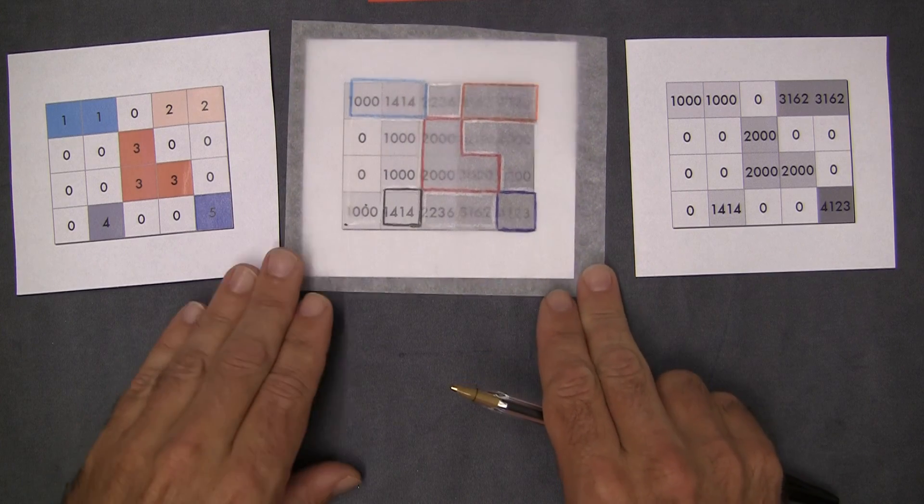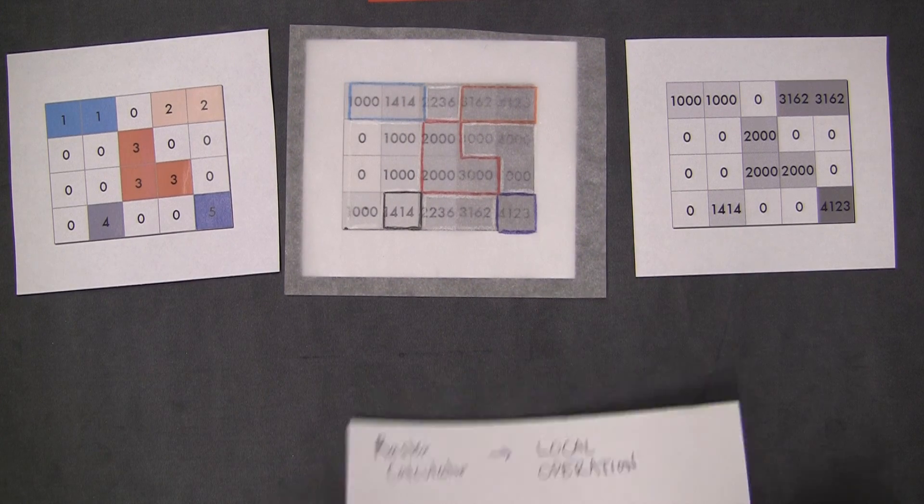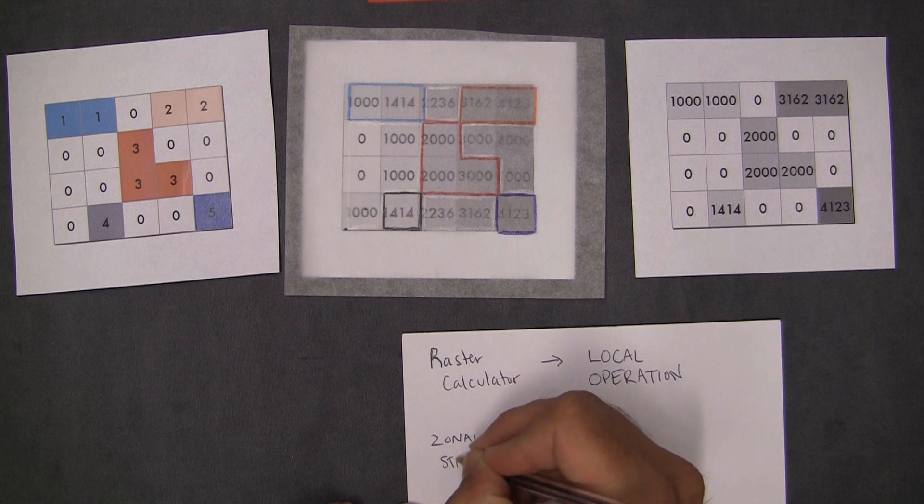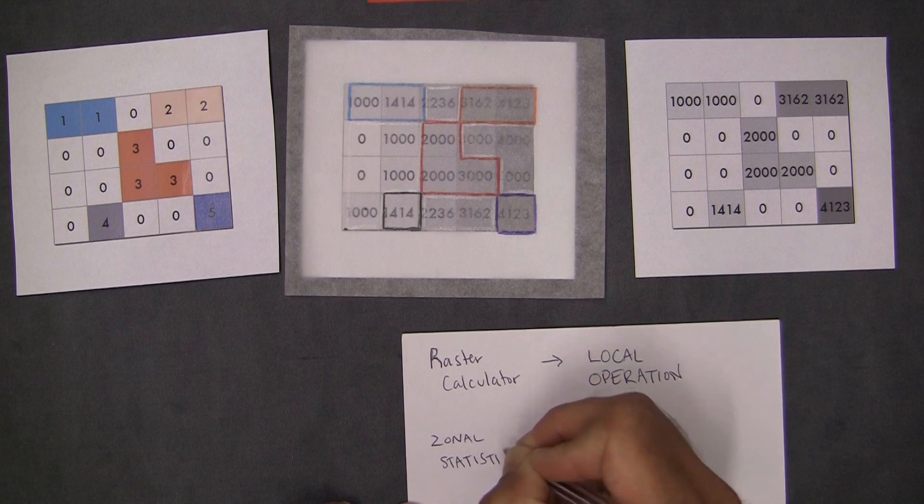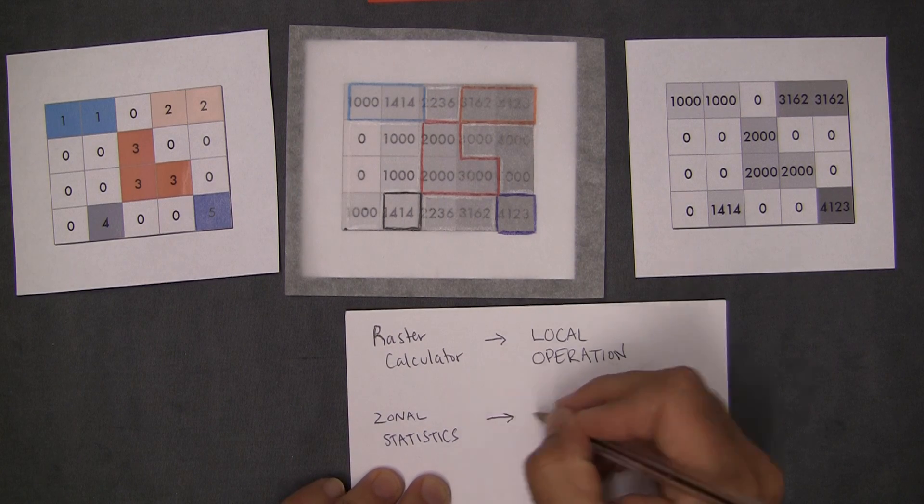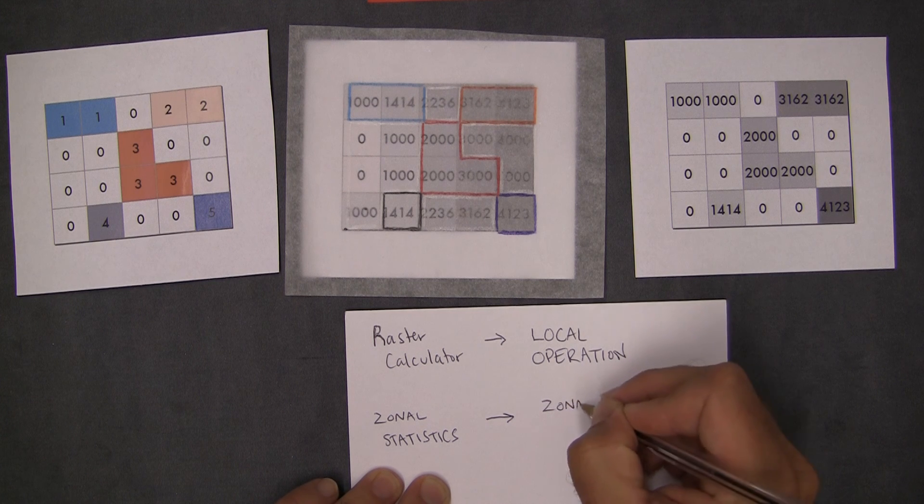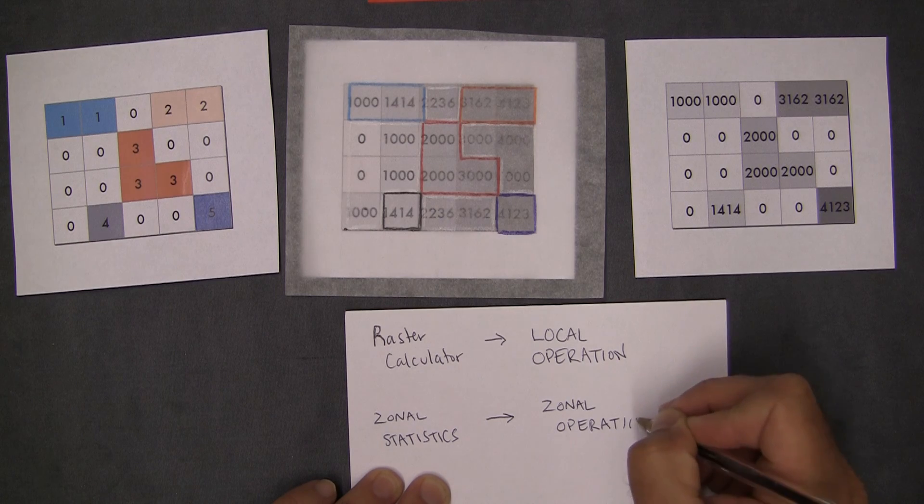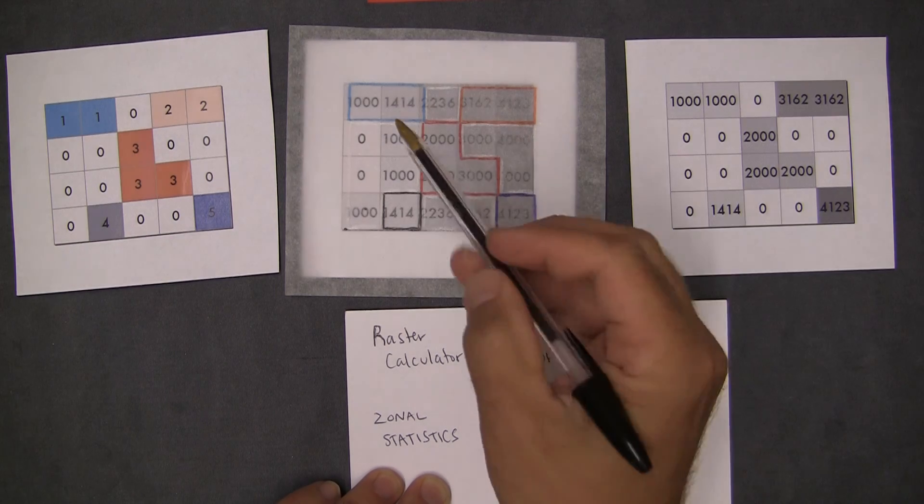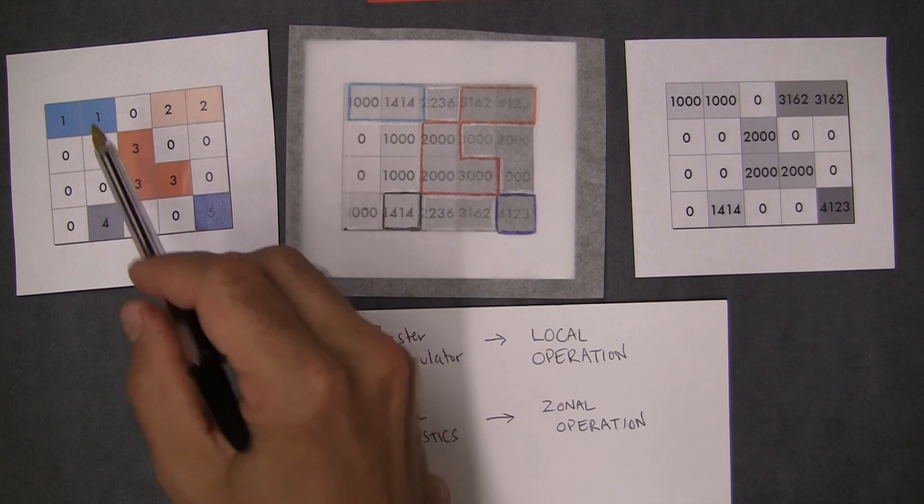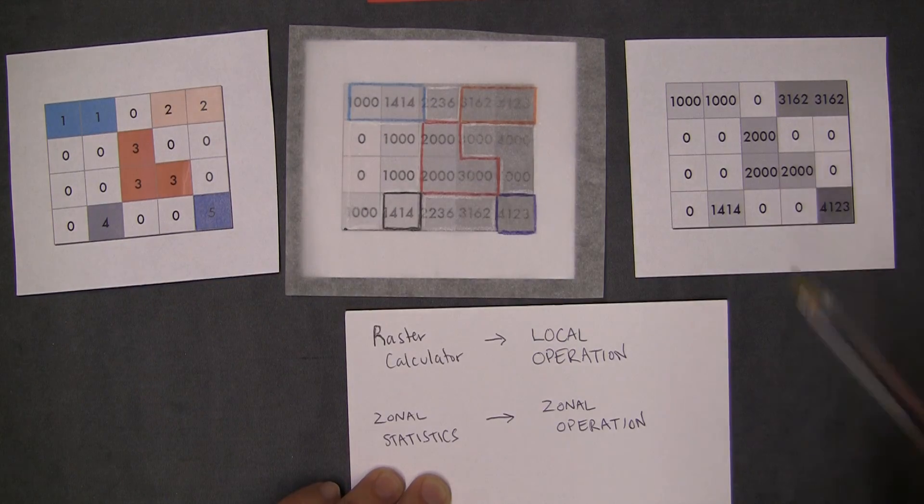So technically, or specifically, this was zonal statistics in the world of ARC. But I said more generally that this was an example of a zonal operation, because here we were creating outputs based on the zones of one of the inputs. In this case, it was the zonal values of this that was driving that output.